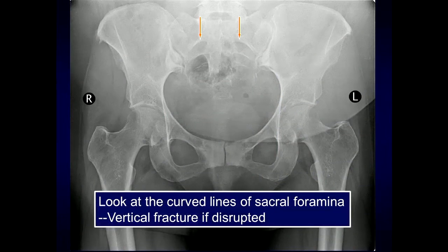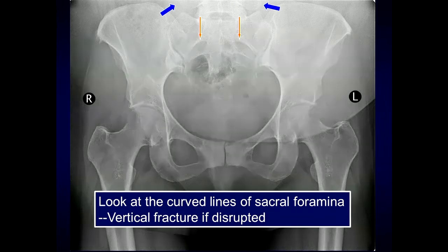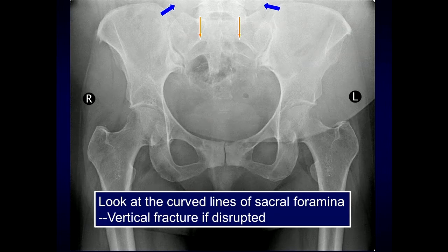When we look at the sacrum, you want to look at those curved lines of the sacral foramina — look for smooth contours. If they're disrupted, commonly those are going to be vertical type fractures. Don't forget to look for fractures of the L5 spinous process, as that can be the first indication that you have a posterior ring injury that would be important to detect.